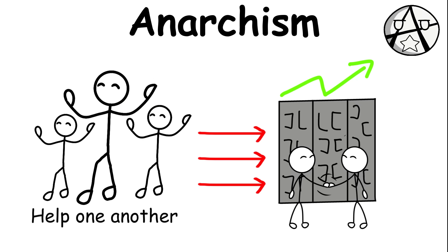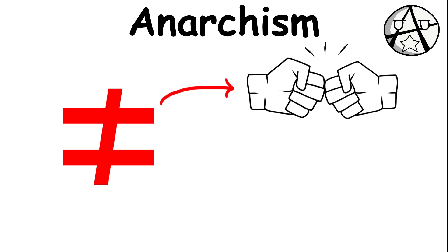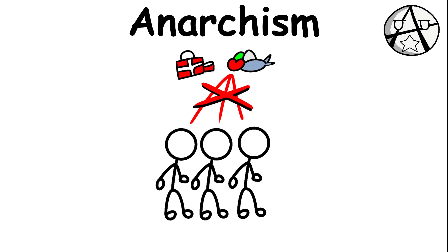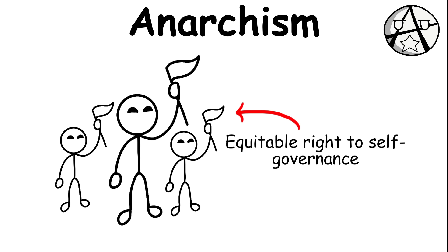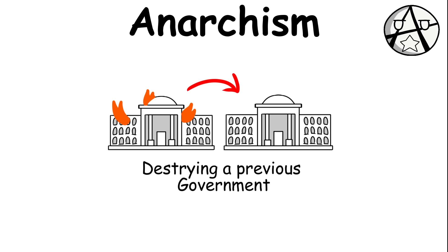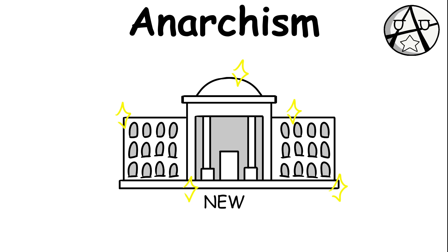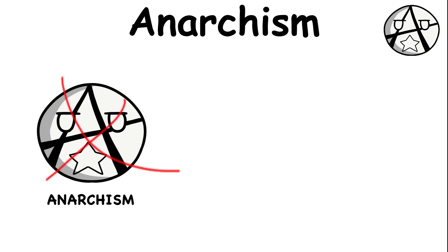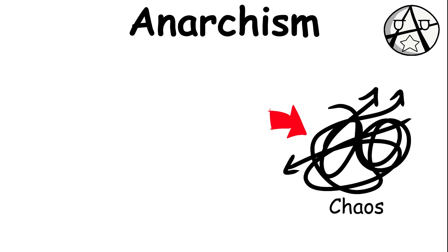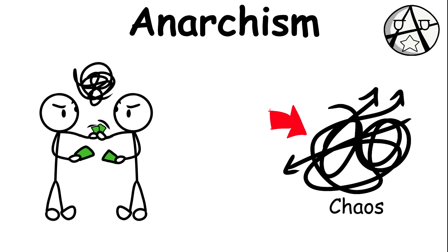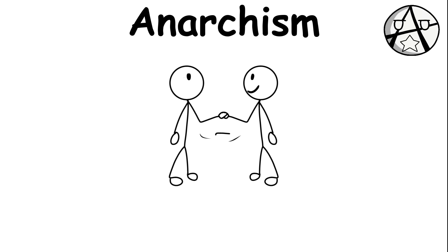Anarchy is different from socialism or communism because there is no equitable distribution of labor and resources, but there exists an equitable right to self-governance. In most cases, anarchies rise from destroying a previous government just before establishing a new form of government. There is no true anarchist government today, but Somalia was in anarchy before 2006 when it had no national government. The problem with anarchism is that it can lead to chaos when everyone is only looking after their self-interests instead of helping one another.